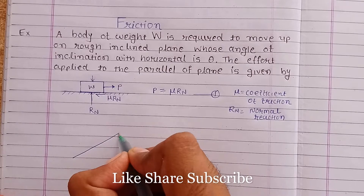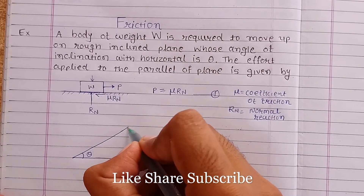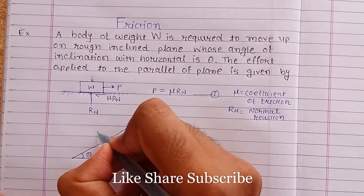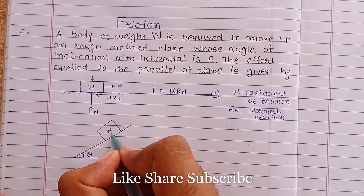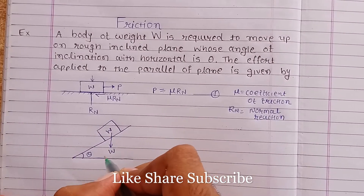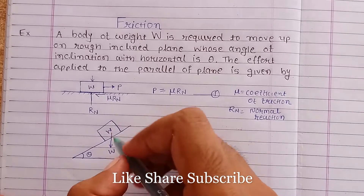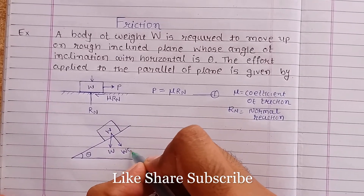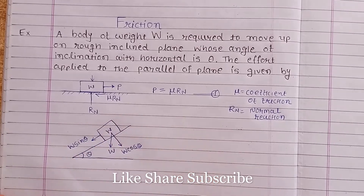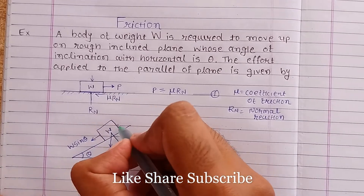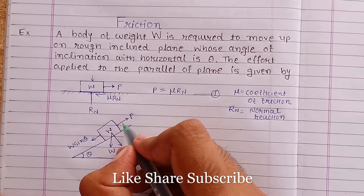Let's say this is the rough inclined plane having angle theta with respect to the horizontal. The load W is placed on it, and the gravity force acts vertically. Resolving this vertical force along the inclined plane, the component perpendicular to the plane is W cos theta and the component along the plane is W sin theta. The effort P is applied along the plane.